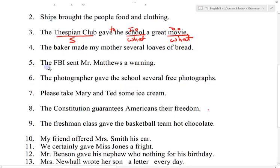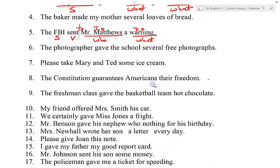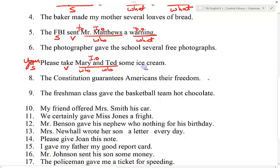Number five: the FBI sent Mr. Matthews a warning. FBI is the subject. Sent is the verb. Mr. Matthews is who, and warning is what. Warning is the direct object, and the indirect object will always come first — so Mr. Matthews is the indirect object. You can insert a form of to: the FBI sent to Mr. Matthews a warning. Number seven: please take Mary and Ted some ice cream. You is the subject. Take is the verb. Mary and Ted are who and who — even though that's two people, it's considered one indirect object. Ice cream is what, so that's the direct object.